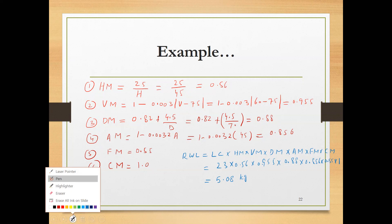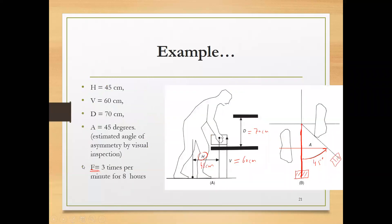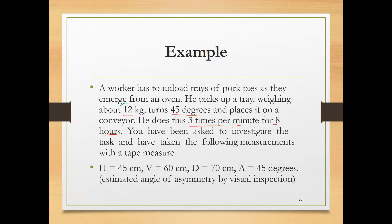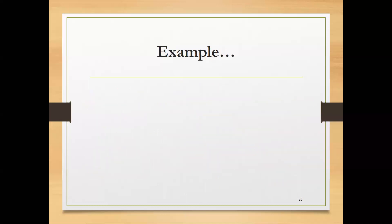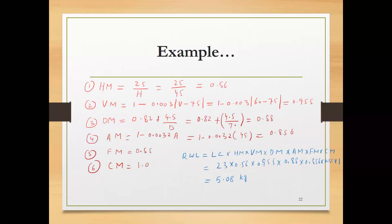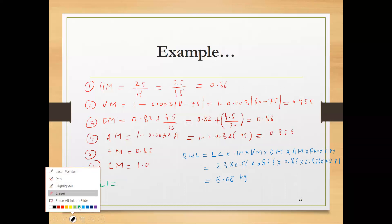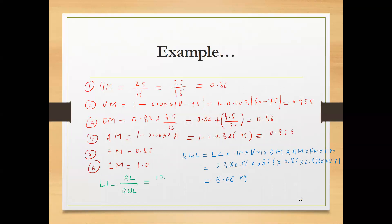The actual load being handled is 12 kilograms. The lifting index is the actual load divided by RWL. So that is 12 over 5.08, giving a lifting index of 2.36, which is much greater than 1.00. This shows that the task is unsafe.